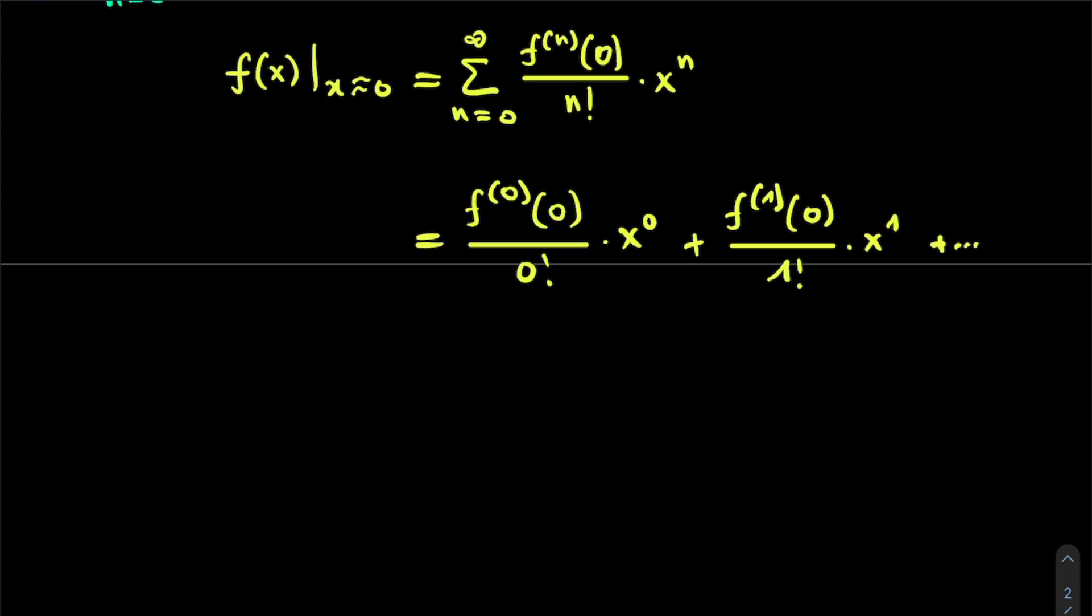Now these notations of the nth derivative can of course be written in a way that we are familiar with. So we get the 0th derivative of a function of x is simply this function itself. So we get f(0), divided by 0 factorial is just 1, and x to the power of 0 is also 1.